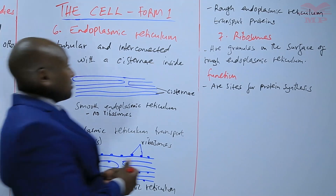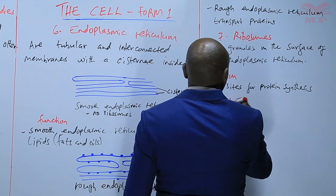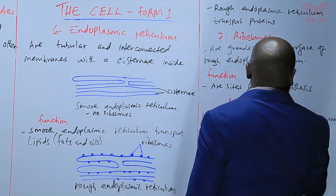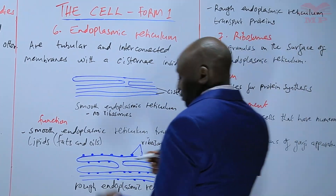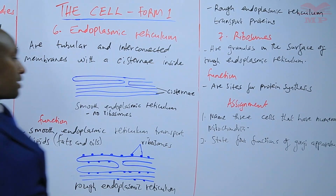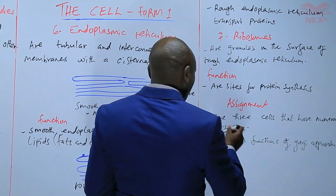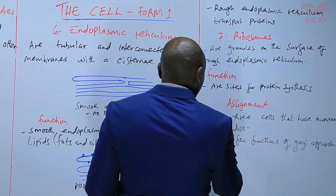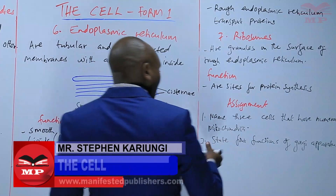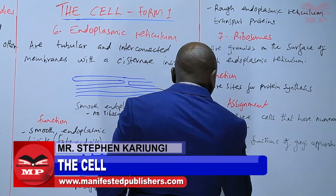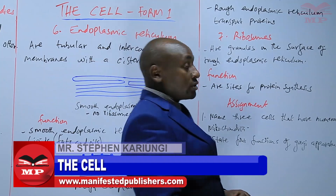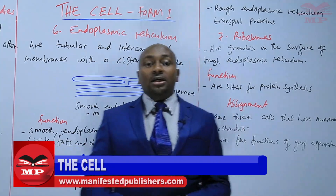Our assignment for today: the first question — name three cells that have numerous mitochondria; we have mentioned them. Number two — state four functions of the Golgi apparatus. We will stop there for today. Until next time, goodbye.